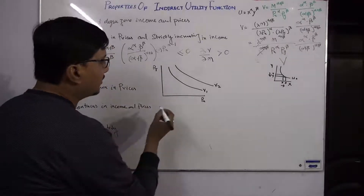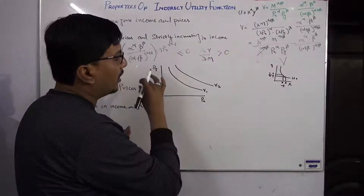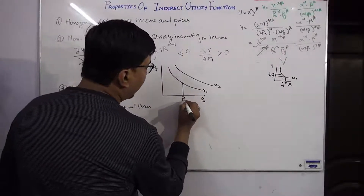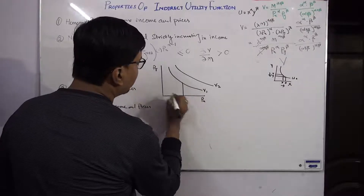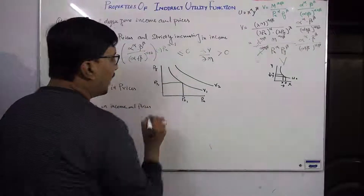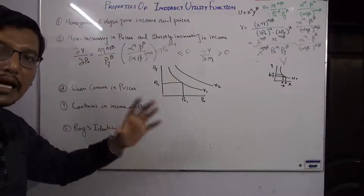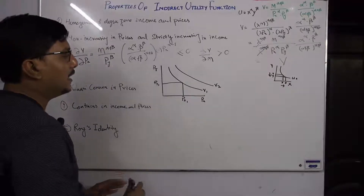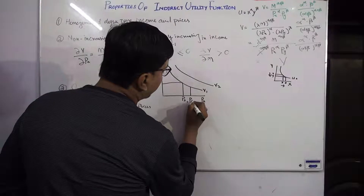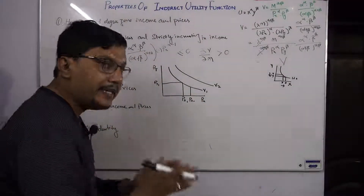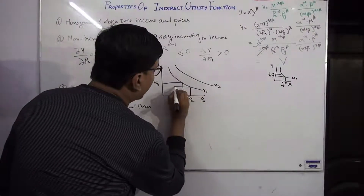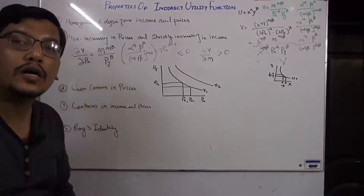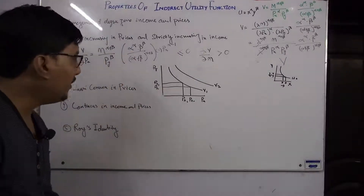To interpret this: suppose at a certain combination of PX1 and PY we achieve a given level of indirect utility. If the price of X increases to PX2, then to remain on the same utility level, the price of the other commodity must fall. Otherwise the consumer would move to a lower indifference curve. This is the interpretation of the third property — quasi-convexity in prices.